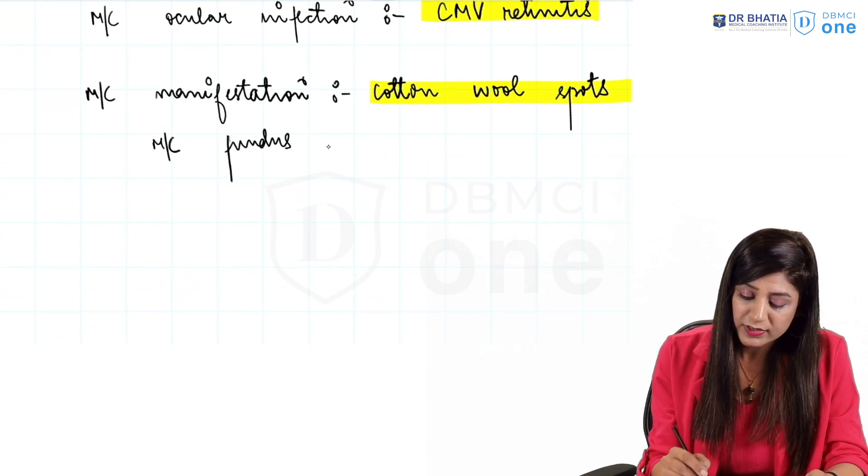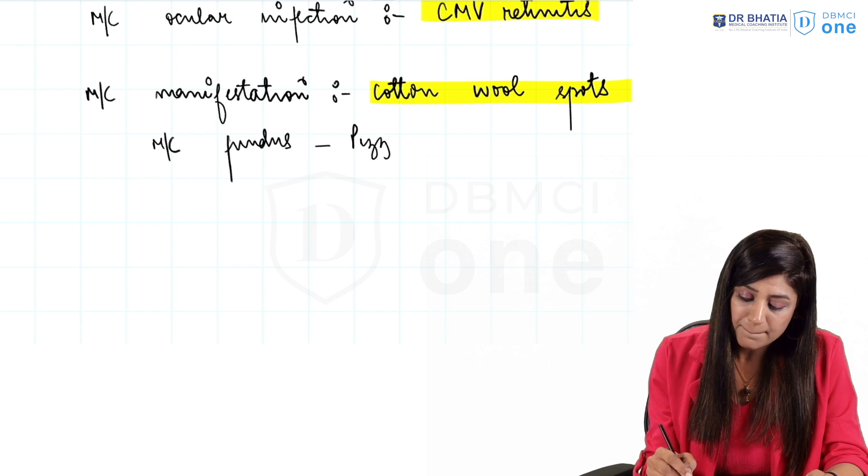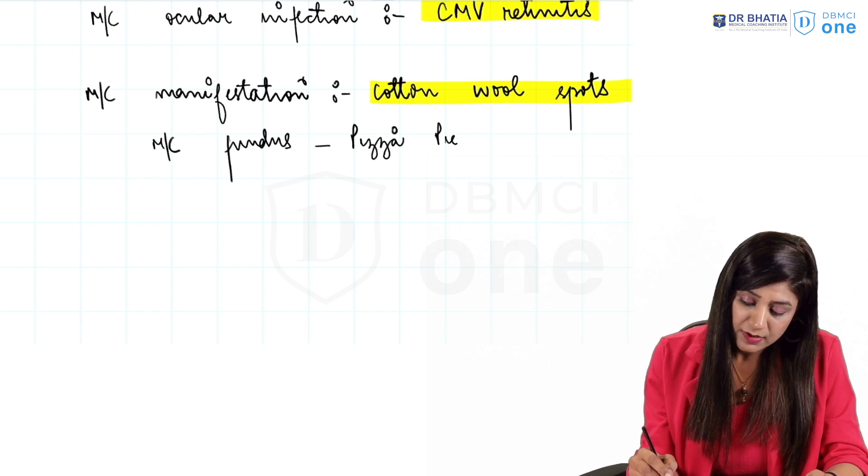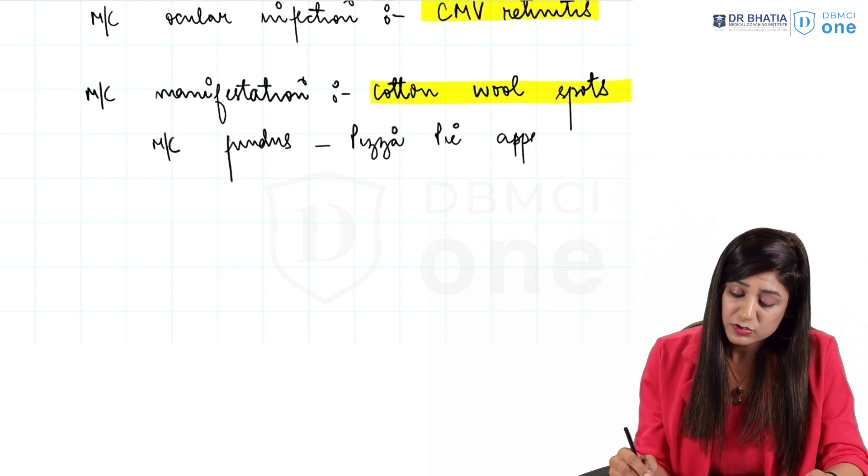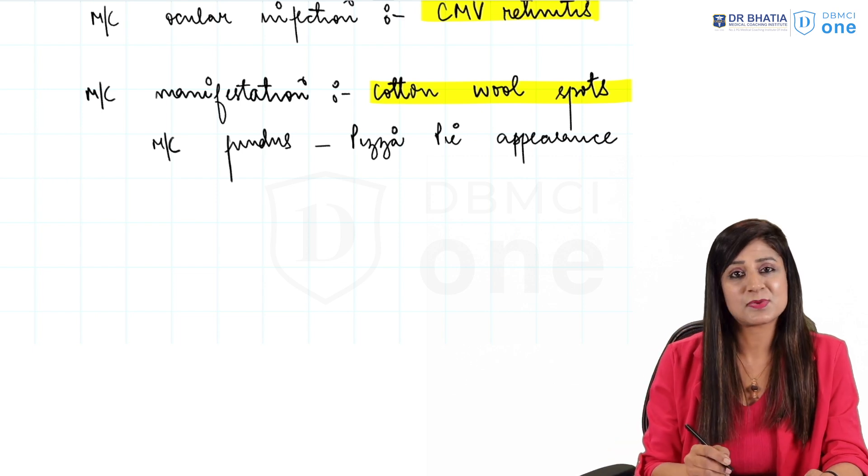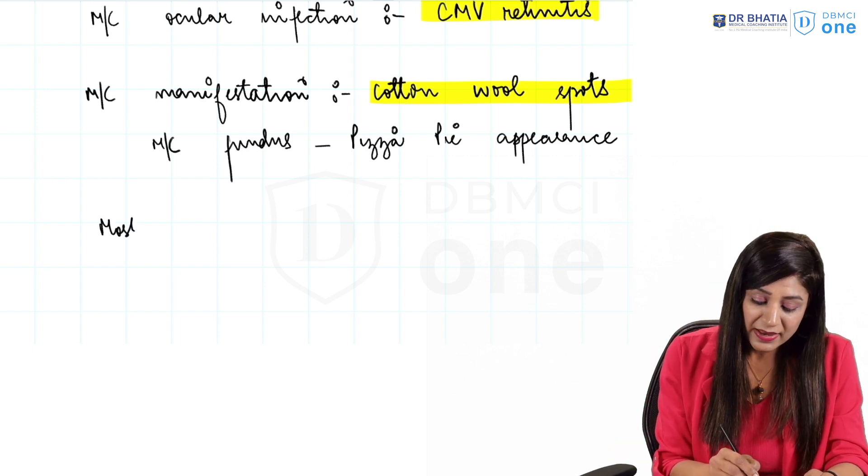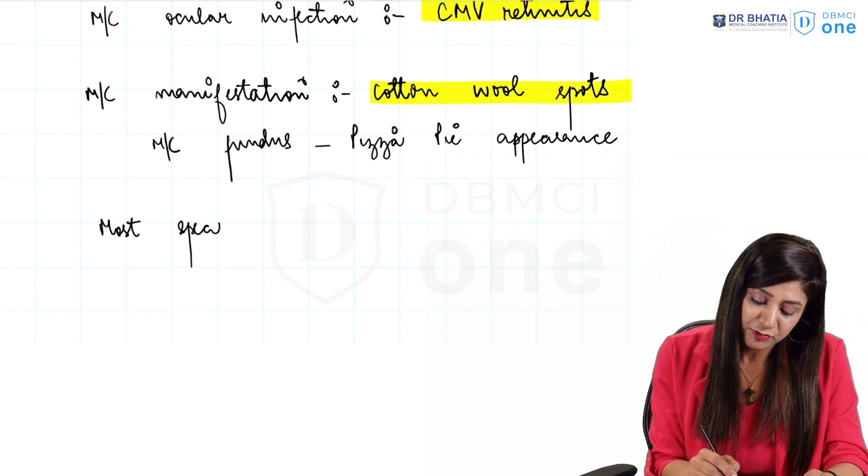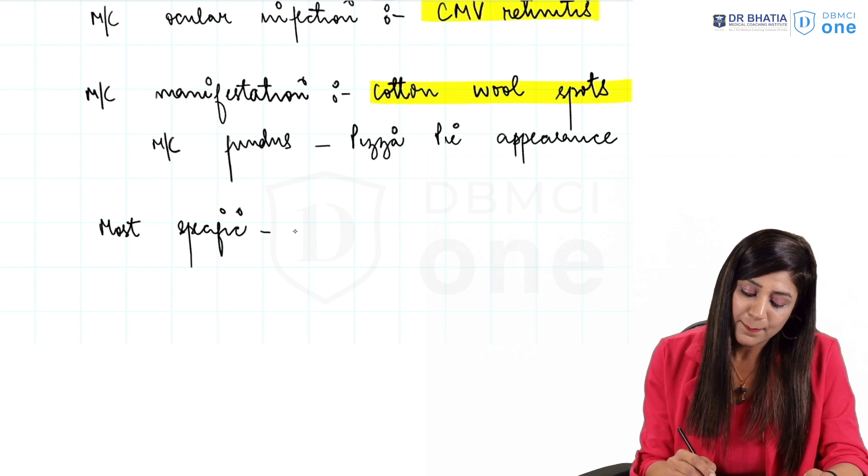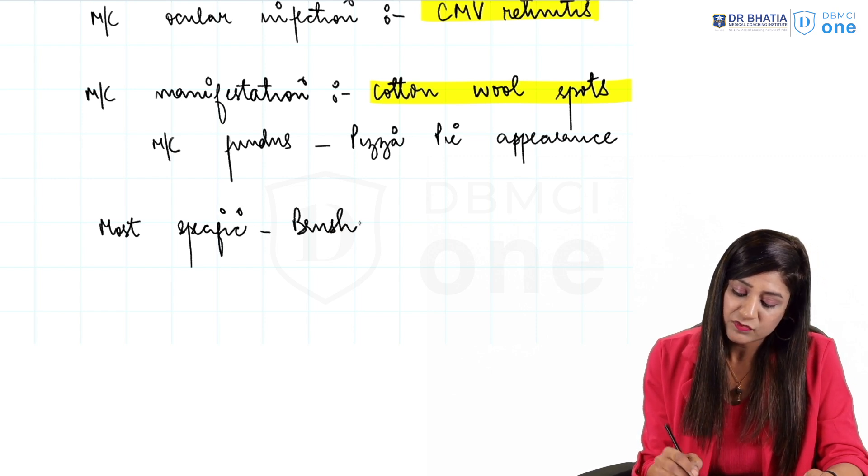The most common fundus that you are going to get is the pizza pie appearance. Though this is most common, not the most specific. So most specific remains different, that will be the brush fire appearance.